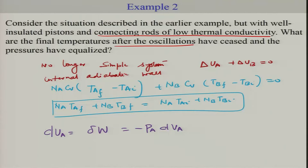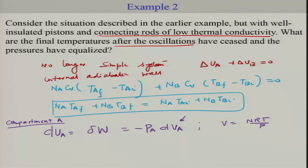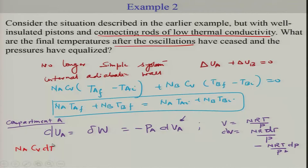We need to eliminate the volume term. Using the ideal gas law, V equals N R T / P, so dV equals N R (P dT minus T dP) / P². Substituting into N_A C_V dT_A equals minus P_A dV_A and simplifying, we get an expression relating dT_A and dP_A.